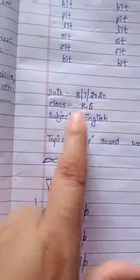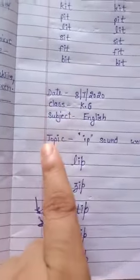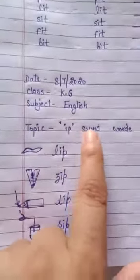Good morning students. Today's date is 8-7-2020. Class KG. Subject English. Topic: IP sound words.